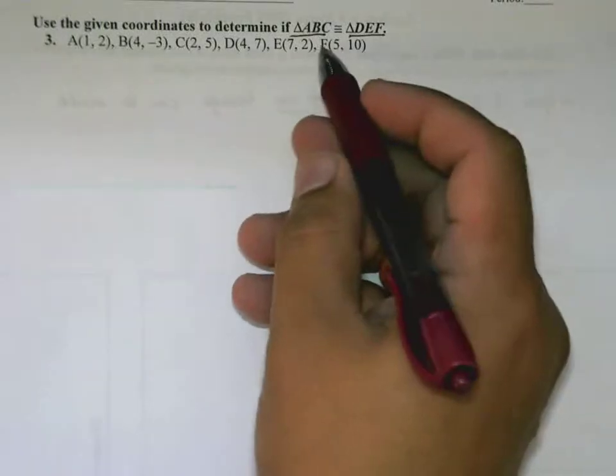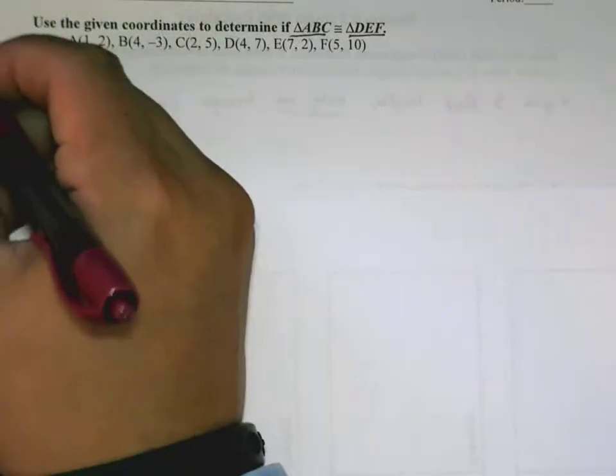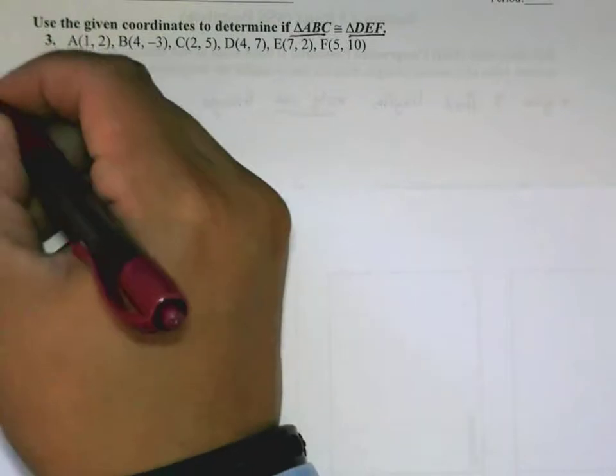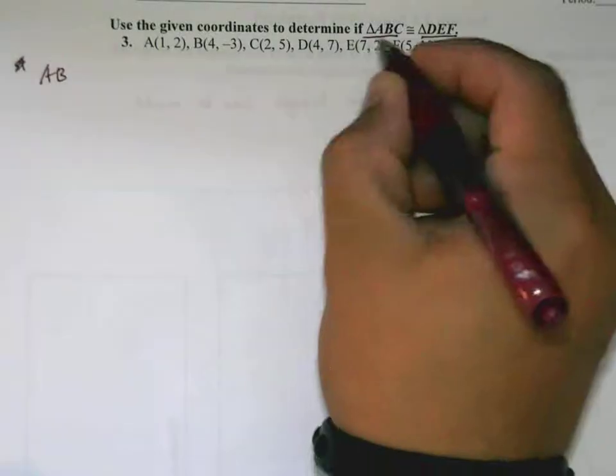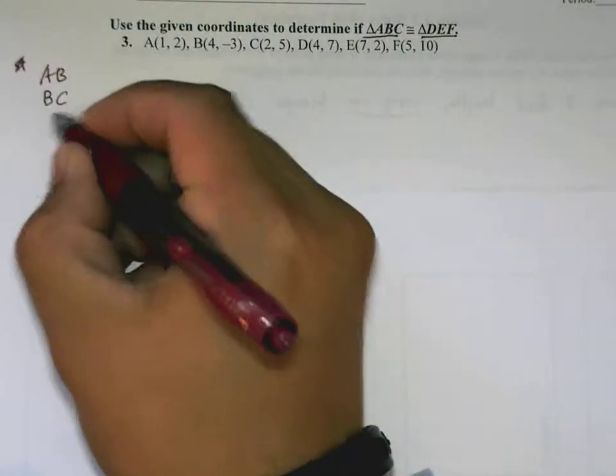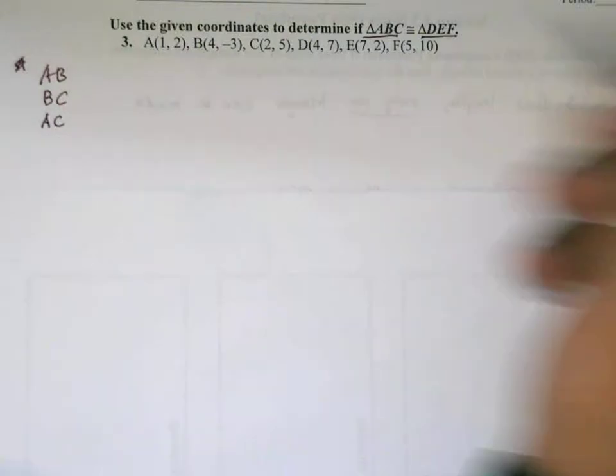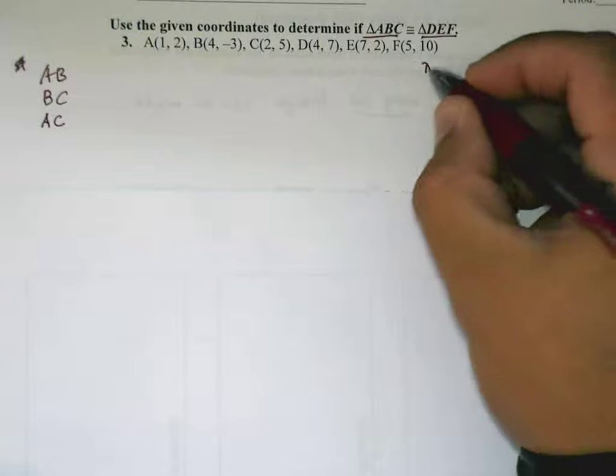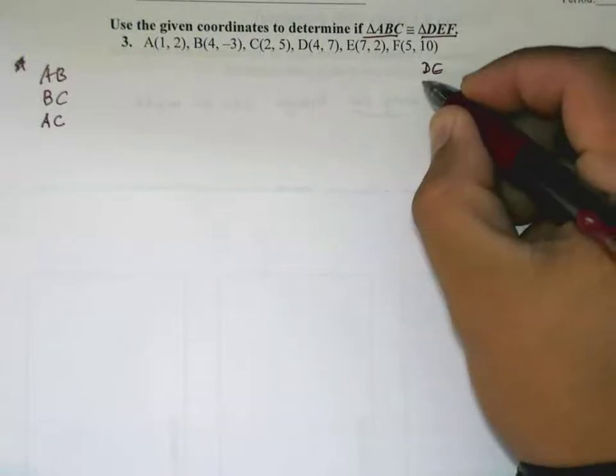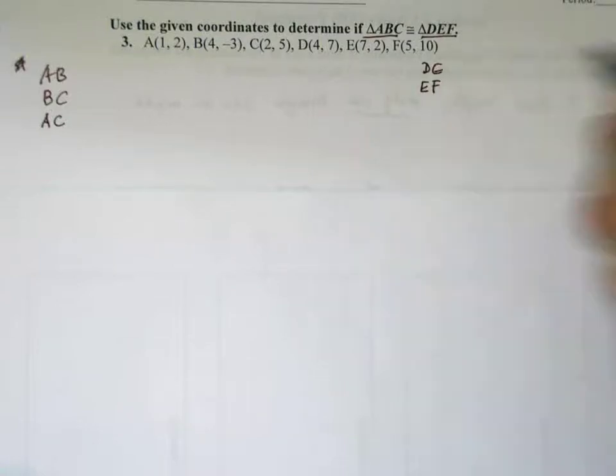So it's important to list out the sides that we're dealing with. We're dealing with sides AB, BC, and AC. The second set is DE, EF, and DF.